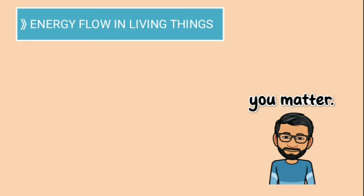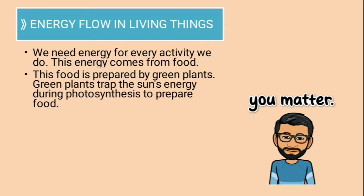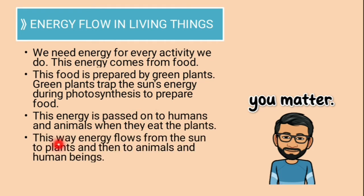Talking about energy flow in living things, we need energy for every activity that we do. This energy comes from food. This food is prepared by green plants. Green plants trap the sun's energy during photosynthesis to prepare food. This energy is passed on to humans and animals when they eat the plants.